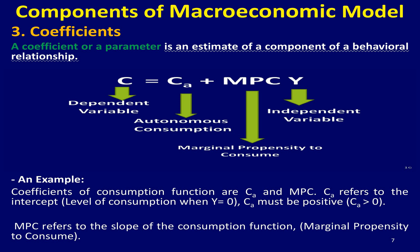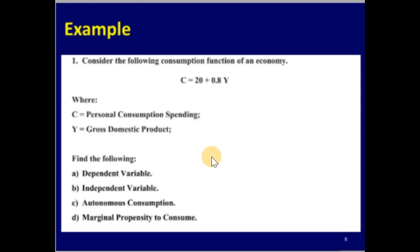For example, the coefficients of the consumption function are CA and MPC. CA is autonomous consumption — the level of consumption when gross domestic product equals zero. Autonomous consumption must be positive. MPC is the marginal propensity to consume: the change in personal consumption spending due to a change in gross domestic income. MPC is between zero and one.